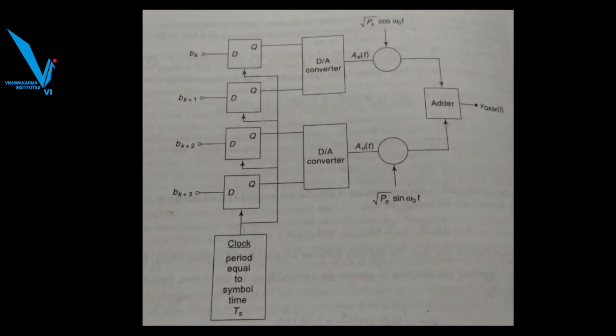Now if we see the generation of QASK, here we have four D flip-flops to which the four bits are given as an input. The output of two D flip-flops is given to a D/A converter, and the output of another two D flip-flops is given to another D/A converter. So one D/A converter gives you the output aᵢ(t), another D/A converter gives aQ(t), multiplied with the carriers cos and sine, and the output given to the adder gives you the VQASK signal.